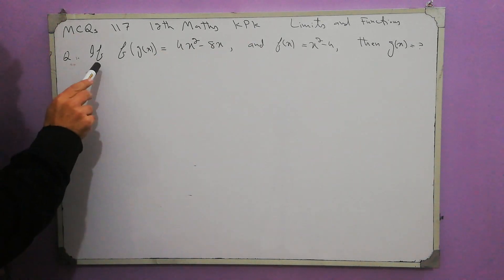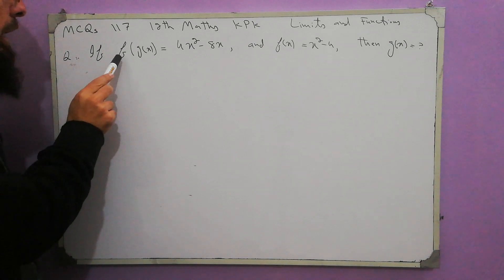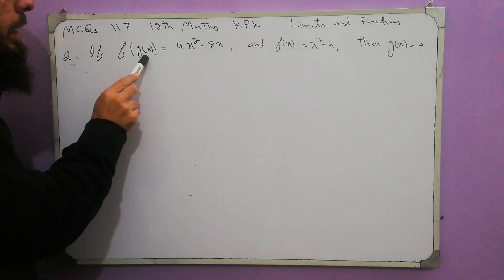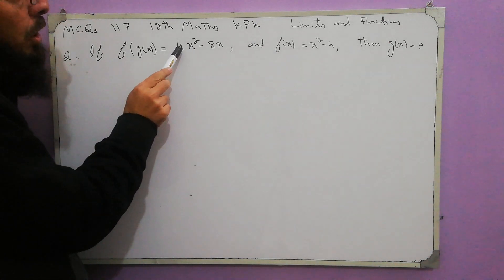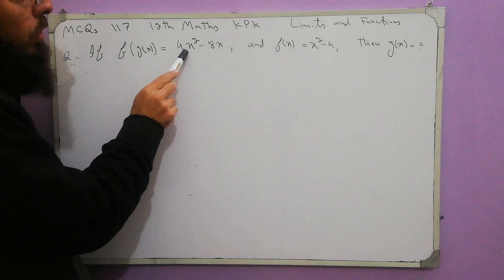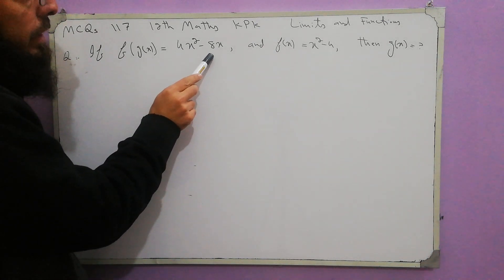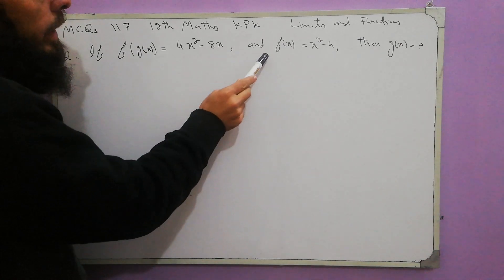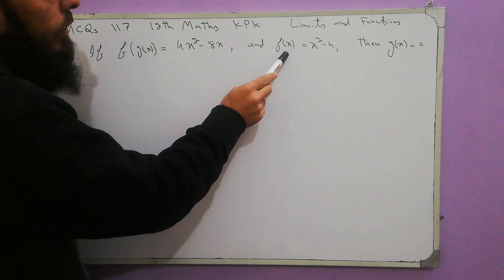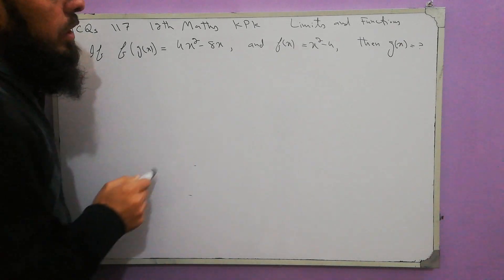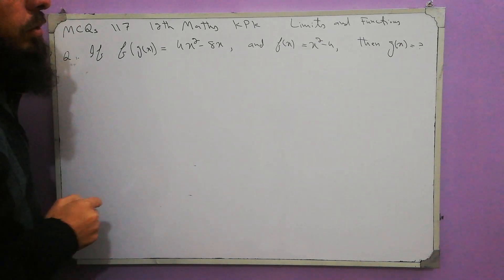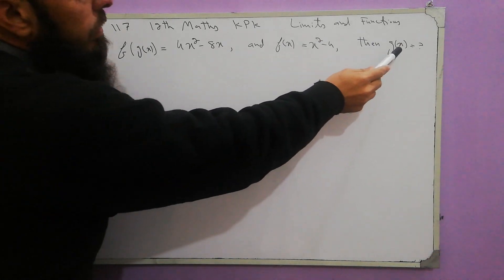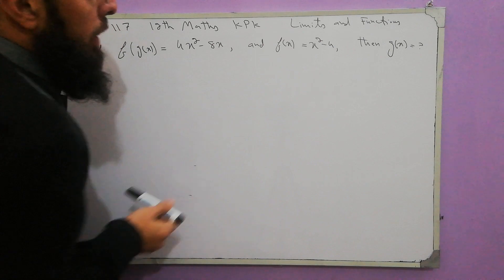The question is: if f of g of x is equal to 4x squared minus 8x, and f of x is equal to x squared minus 4, then find g of x.